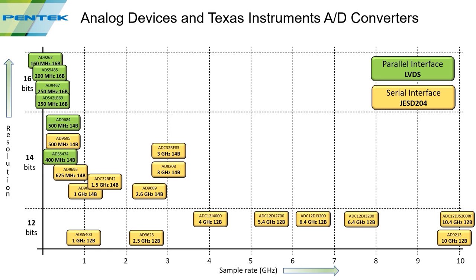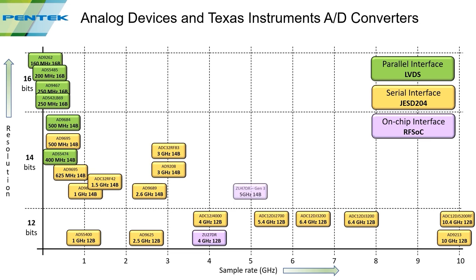The last converter to add to this plot is the RFSOC, which uses parallel interfaces but they're all contained with the converters on the FPGA chip. In 2017, Xilinx introduced their first RFSOC part with ADC rates at 4 Giga samples per second and 12-bit resolution. In 2020, they introduced Gen 3 parts, bringing the ADC sample rate up to 5 GHz with 14-bit resolution. Since RFSOC entered the marketplace, some manufacturers have started producing converters in the gigahertz range with parallel interfaces — including TI ADCs running up to 6.4 GHz.